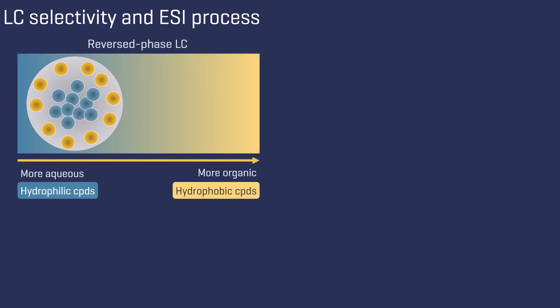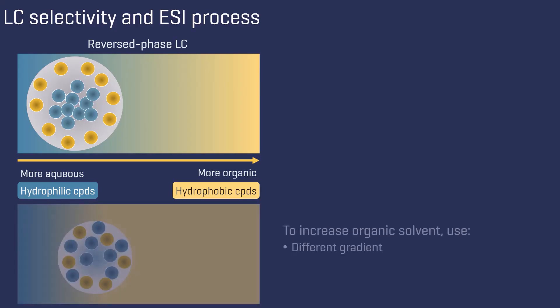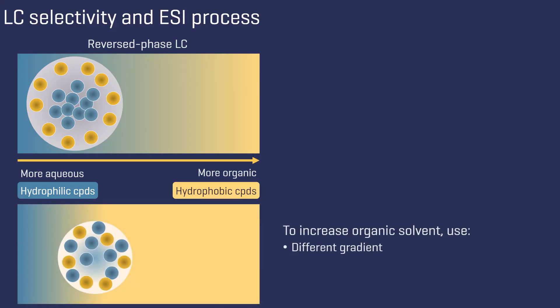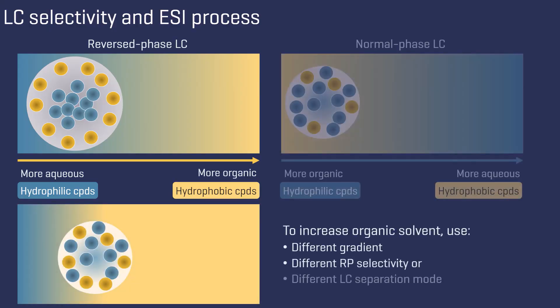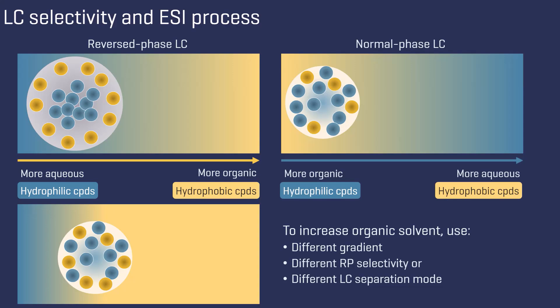When reversed-phase liquid chromatography is used, it is the nature of hydrophilic compounds to be eluted within the more aqueous phase of the gradient. Using either a slightly different gradient, another reversed-phase selectivity, or even a different LC separation mode, such as normal-phase LC, can be beneficial.